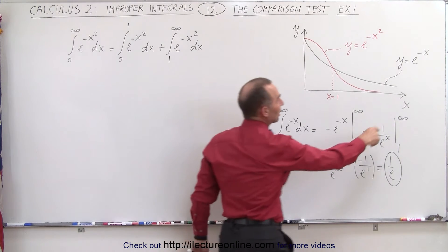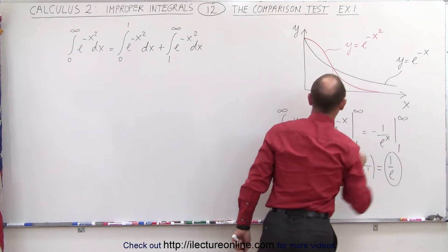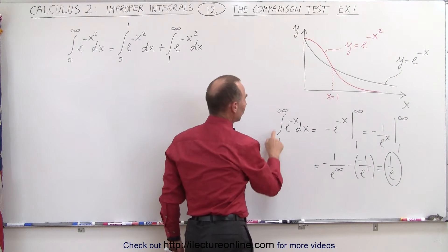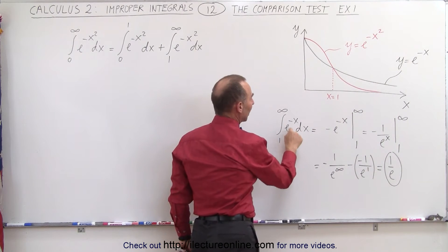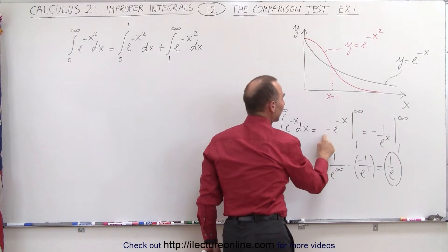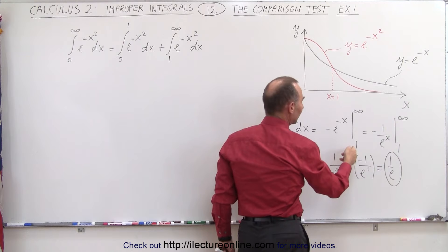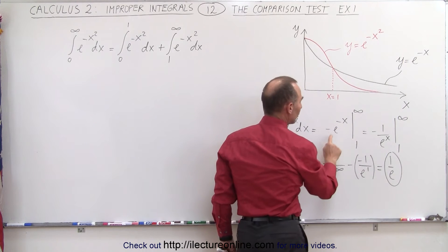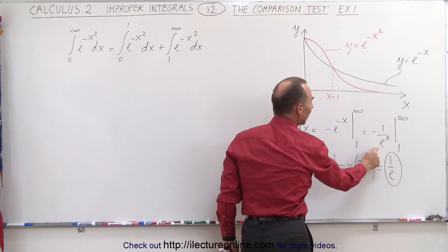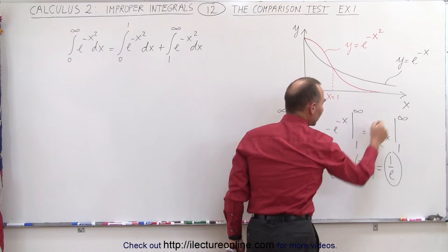For example, if we take the function y equals e to the minus x and integrate it from 1 to infinity, then e to the minus x, when we integrate it, becomes minus e to the minus x. We can see that if we evaluate it from 1 to infinity, we'll rewrite this as negative 1 over e to the x, evaluate it from 1 to infinity.